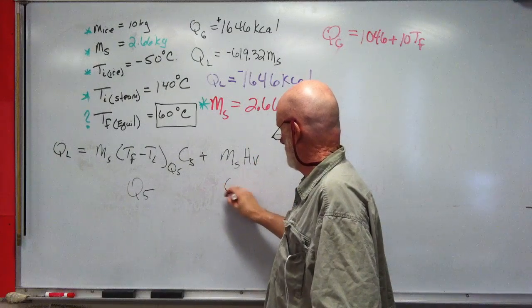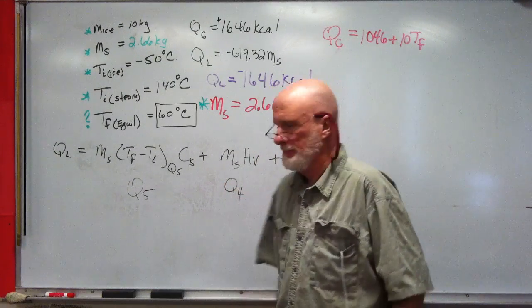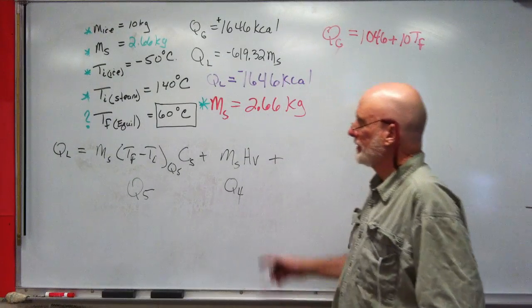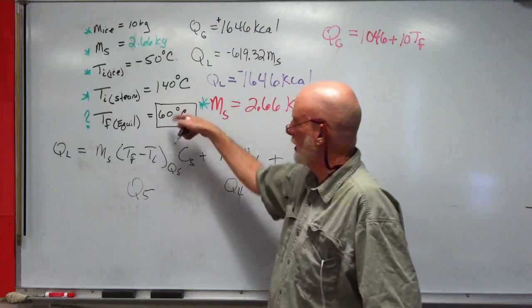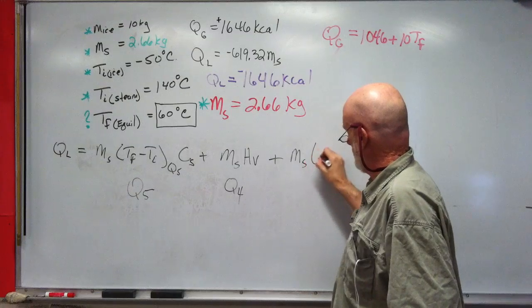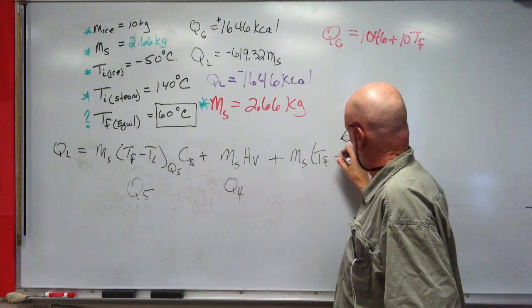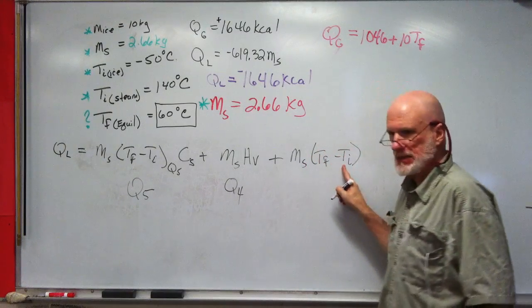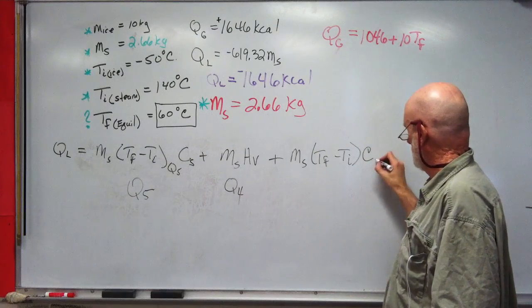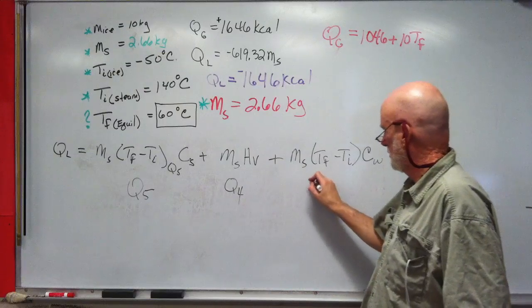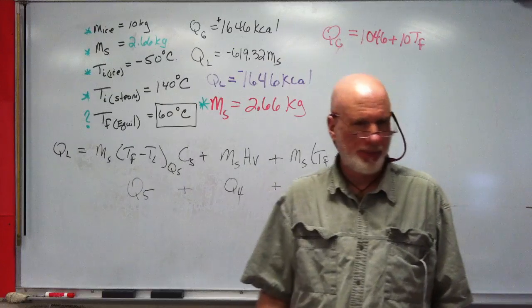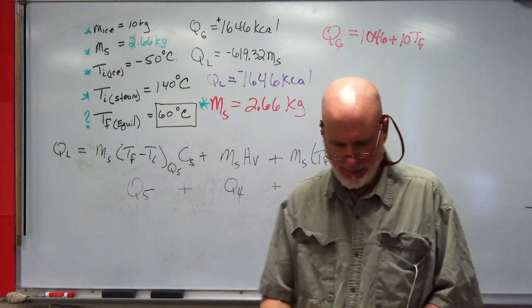Q5—that's the first heat, that's Q5. This will be mass of steam times heat of fusion, Q4. And then it'll be what that temperature is. We don't know what that temperature is, so it's going to be the mass of the steam times TF minus TI—we know that's 100—and then C water.